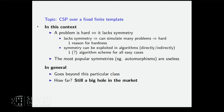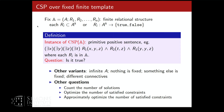Let me start with the definition. A template is a relational structure — a set and a bunch of relations. A relation is either a subset or a predicate. An instance is a primitive positive (PP) sentence over the structure. PP means you can use conjunction, existential quantification, and equality — that's it.